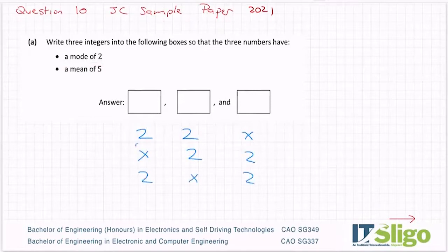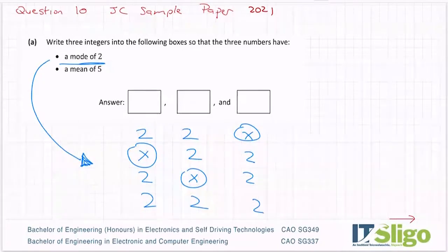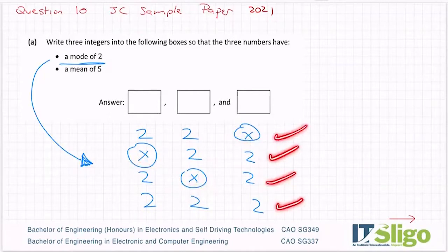Which means that at least two of these are the number two. And I'm just putting x in saying that could be another number. Or of course, all three of them could be two. And all of them meet the criteria of a mode of two. So the ones I've encircled, the x's, it doesn't matter what they are for mode, because all of these have a mode of two, the value that occurs most often.